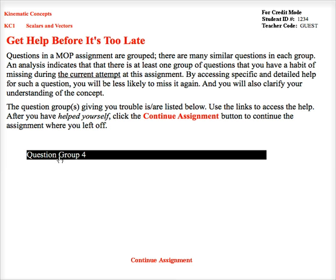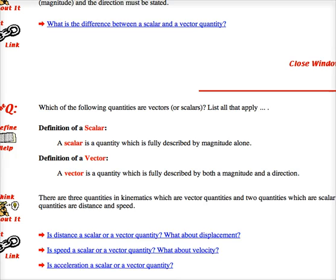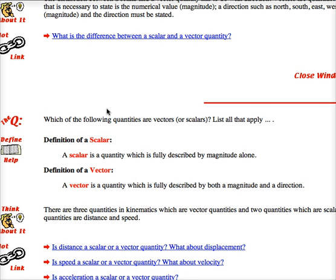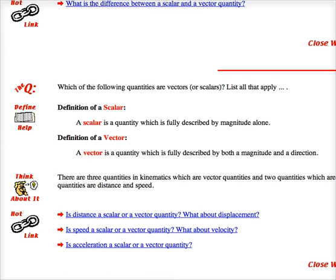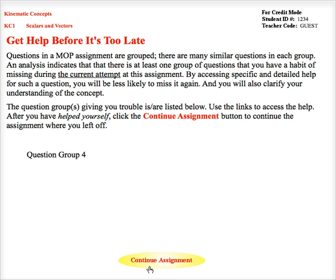This is Minds on Physics' way of giving you some help. It goes right to a place on another web page where it gives you information about scalars and vectors, gives you some things to think about, and it tries to help you out. I'm going to click the close window and come back to the question. Continue the assignment.